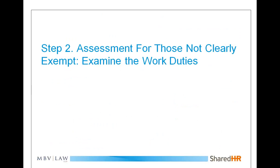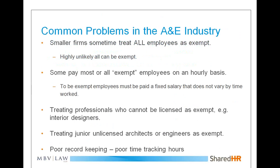The most vexing area, particularly for smaller firms, is junior professionals or those who are not clearly licensed. Smaller firms with 6 to 12 people often treat everyone as exempt, but it is rare in practice that everyone truly qualifies. The most common problem in architecture and engineering firms is people who are one or two years out of school, not yet eligible for licensure, but whom the employer wants to treat — and pay a salary — as professionals, even though they have a hard time falling within any exemption.